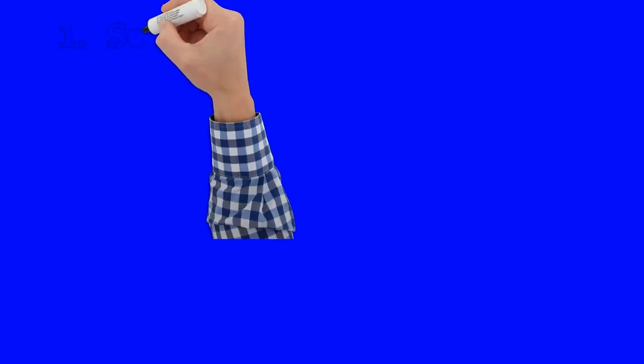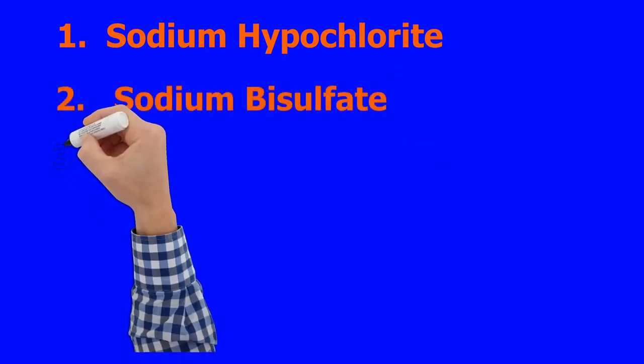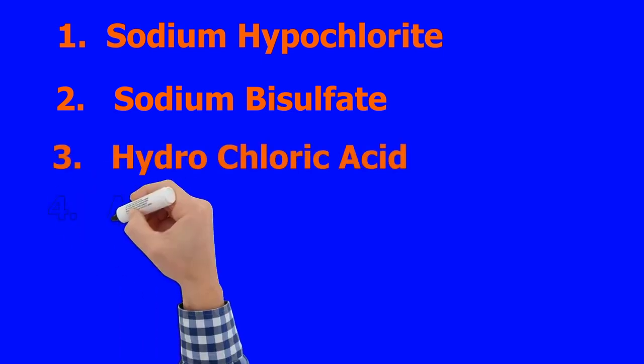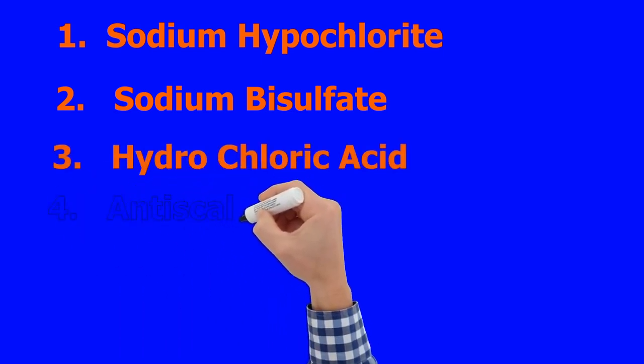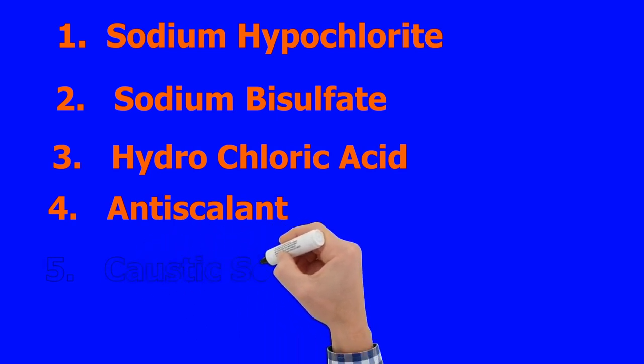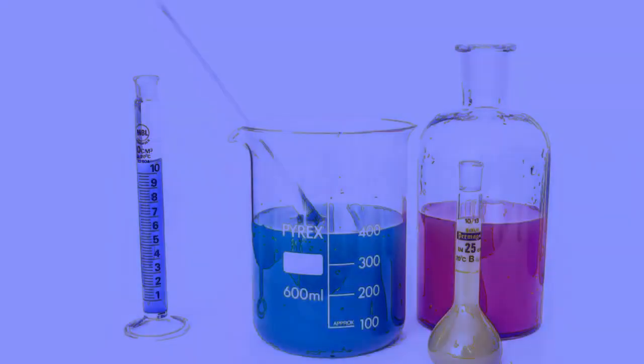There are 5 types of chemicals used in the reverse osmosis plant: 1. Sodium hypochlorite, 2. Sodium bisulfate, 3. Hydrochloric acid, 4. Antiscalant, 5. Caustic soda. Now let's see the purpose of every chemical dosing.